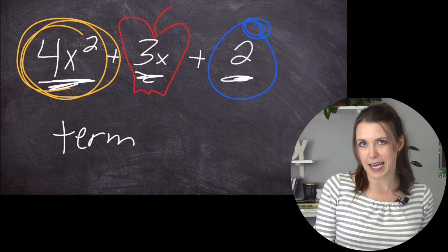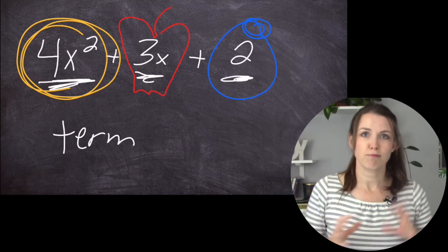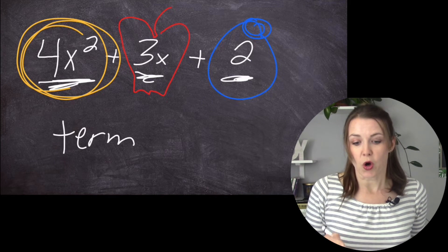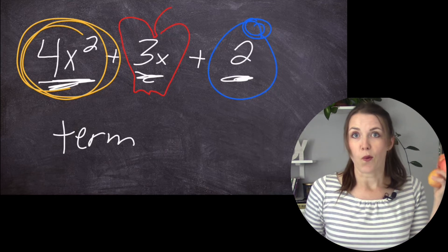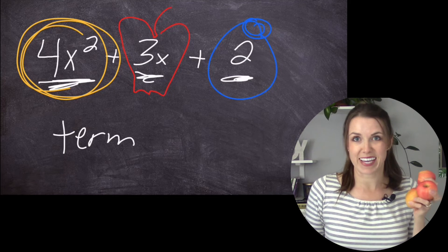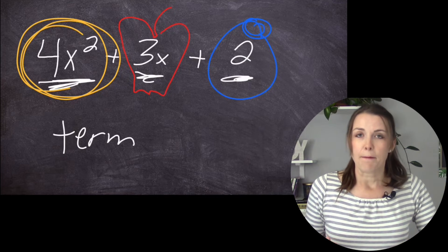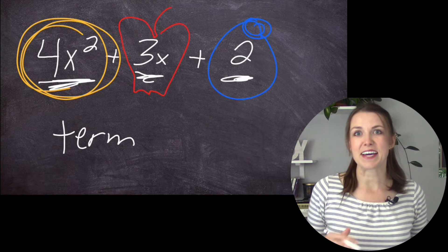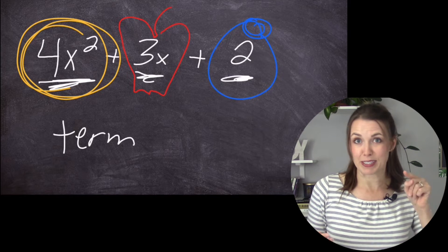So we understand the blueberries, right? We understand just plain adding numbers. Now we understand the apples, which is just taking three apples and adding them all together, which is 3X. But we have 4X squared. So how do you get the squared? Let me teach you.